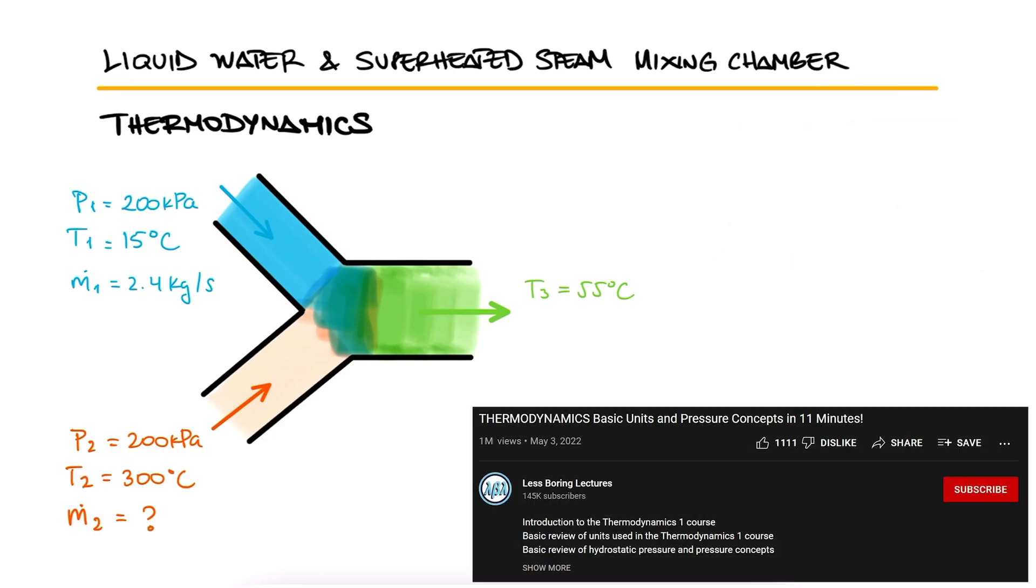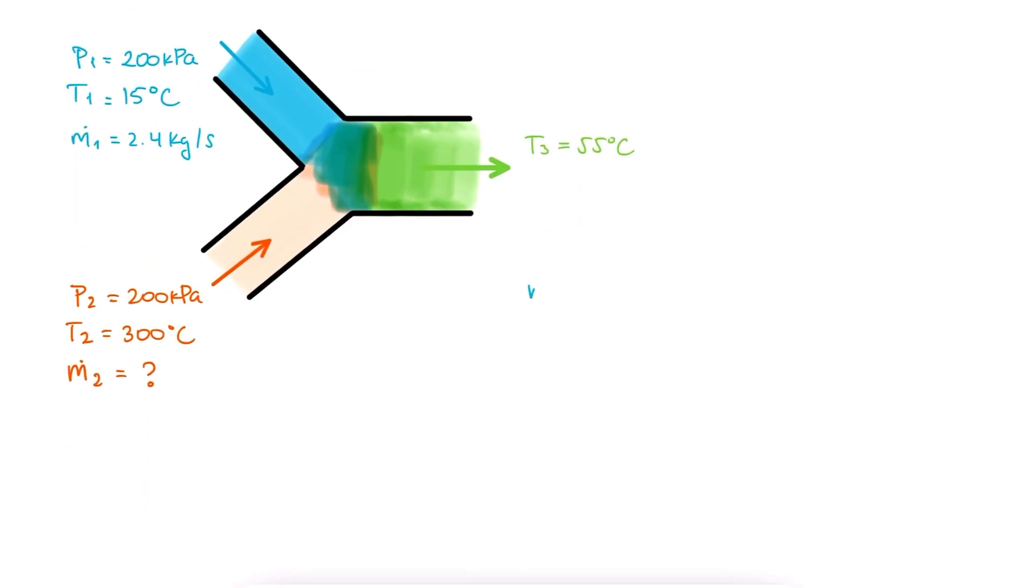The link to that 9-minute lecture and all the other lectures of the thermo course are found in the description below. What we know about mixing chambers like this is that there's a mass conservation and, from what we learned in the main lecture, that the energy conservation only takes into consideration enthalpy values.